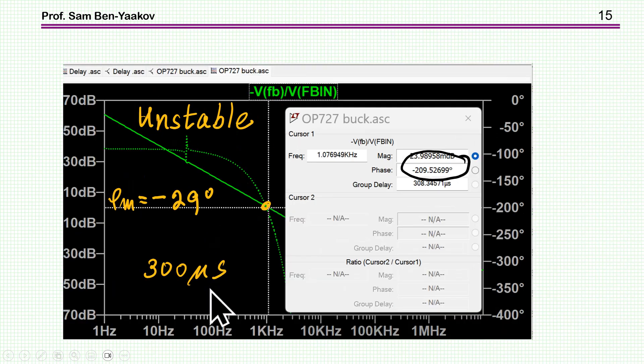And then I've increased it to 300 microseconds. And then it's getting to be too large a delay. And it's minus 209, meaning that the phase margin, you might say it's minus 29. So it's above 180 degrees. This is an unstable system. No question about that.